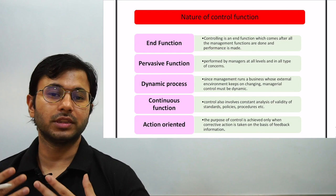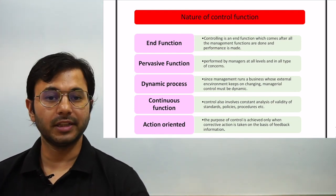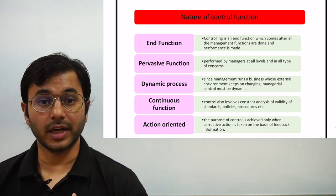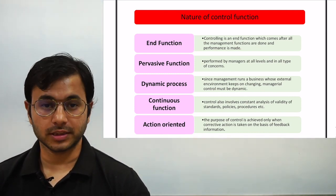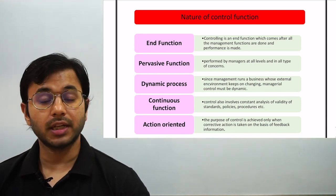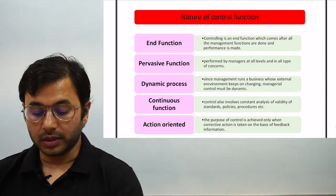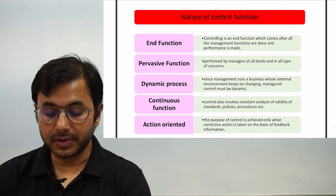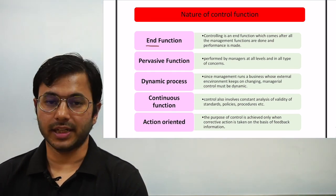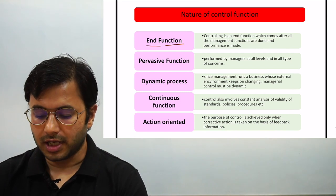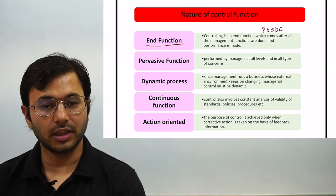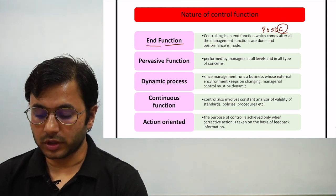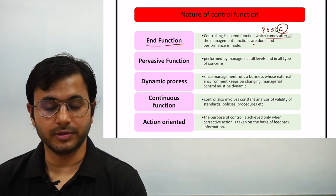The first one is nature of control function. What is the nature, what is the feature of control function? Everything and everybody that you talk about has a nature, has a personality. Control function also has a personality, has a specific set of features that are important to remember. Number one is end function. End function means that it comes towards the end — very easy to understand. Controlling comes after all the management functions are done and performance is made.